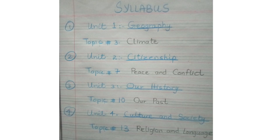This is the first video of your final term online classes. Let's get started. Note down the final term syllabus for SSD. We have taken four chapters from the book. Chapter one is from Unit One Geography, Topic Three: Climate. Chapter two is from Citizenship, Topic Seven: Peace and Conflict. Chapter three is from Unit Three Our History, Topic Ten: Our Past. The last chapter is from Unit Four Culture and Society, Topic Thirteen: Religion and Language.